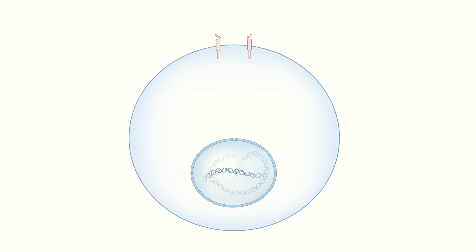Cells receive signals from outside via receptors. When a ligand binds to its receptor, a signal is transmitted as part of the signaling cascade, which may alter the function of the cell.